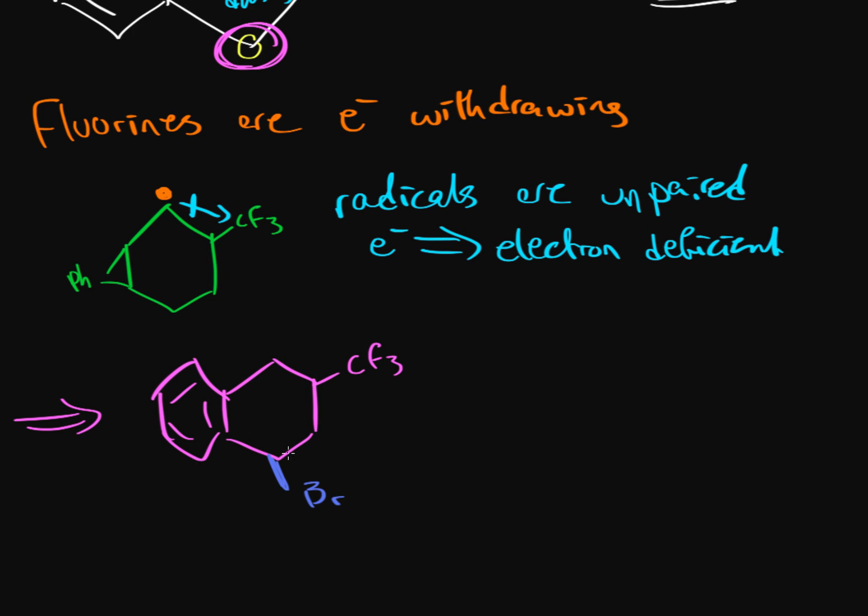And that's because this secondary allylic has less inductive effect, has less or suffers from less inductive effect. So it suffers from less inductive effect, and that makes it more stable because remember, radicals are electron deficient and they want electron density.